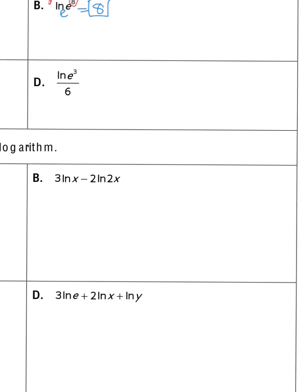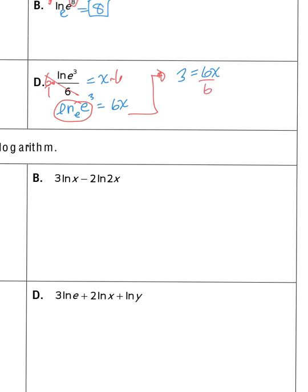For this one, since it's not set equal to anything, set it equal to x. Before putting it into exponential form, I need the log by itself, so I multiply both sides by x divided by 6. I end up with natural log base e of e to the third equals 6x. That natural log of e to the third becomes 3, so I have 3 equals 6x. Dividing by 6, x equals one half.